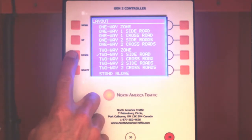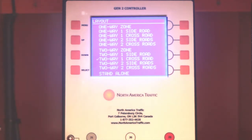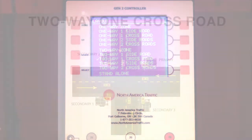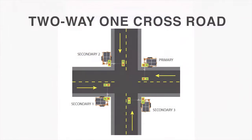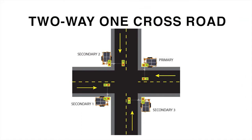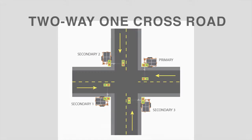Two Way One Cross Road requires the primary and secondary one to control the two-way traffic. The secondary two and secondary three will be the crossroad as a two-way.